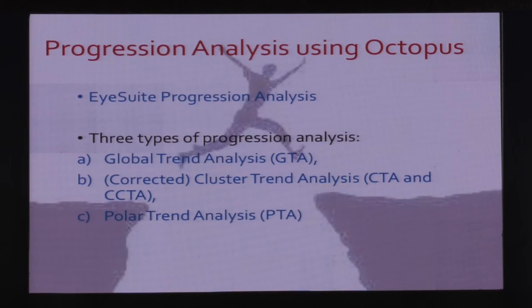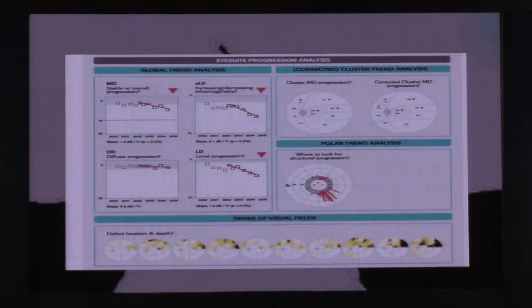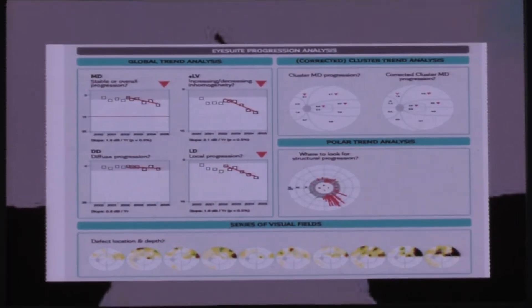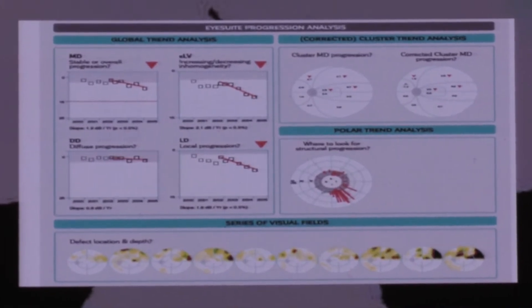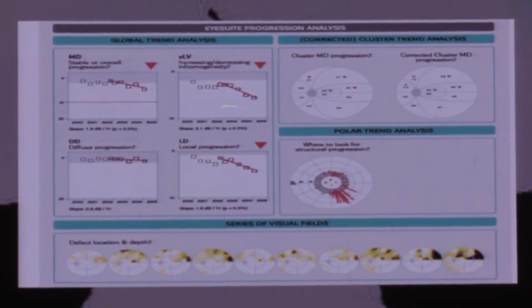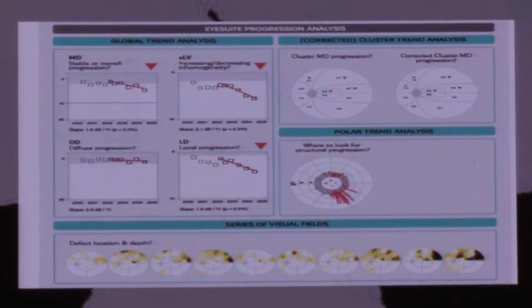In comparison to Humphrey's, Octopus is a little different, where we look at the different indices, like the global trend analysis. Then something very interesting is the cluster trend analysis and the polar trend analysis. If you all use your systems which is attached to your Octopus machine, it is pretty easy to understand. What you need is a minimum of three visual fields. If you just go and click your progression analysis software, all these four plots will be shown there. Of course, you have to buy the software separately, that is a pro version. Then you can see all this here. I'll just explain to you each one of it. With this itself, I think the whole thing can be completed.